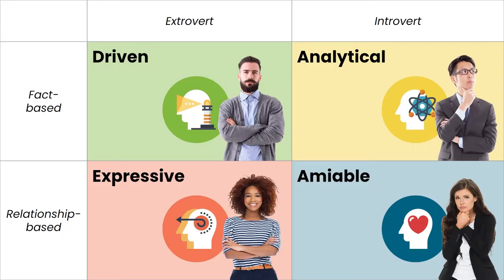Here's a quick review. These four personality styles can be represented on a grid — each style is a mixture of two basic traits: extroverted versus introverted, and fact-based versus relationship-based. This is a great way to remember the basics of each style. Now that we've got a good grasp of these different styles and how they work, let's move on to the different ways you can appeal to them.